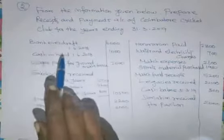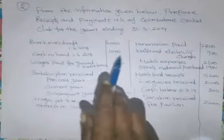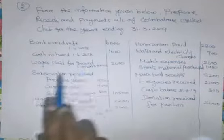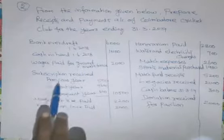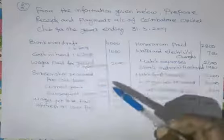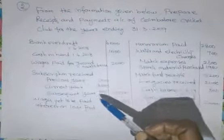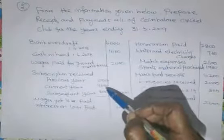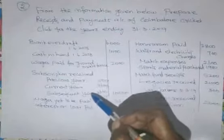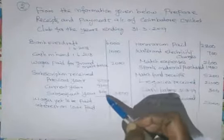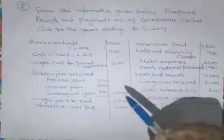Cash in hand is a favorable balance: Rs. 1,000. Wages paid for ground maintenance Rs. 2,000. Subscription Receipts — previous year Rs. 500, current year Rs. 9,600, subsequent year Rs. 400. Total Subscription Receipts during the year Rs. 10,500.